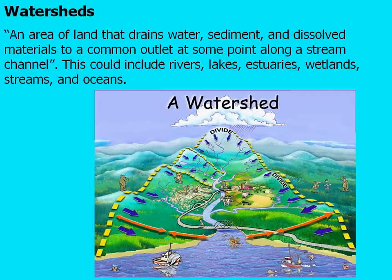Any rivers, lakes, streams, estuaries, wetlands, and even the ocean would be considered water bodies contributing to the watershed. As you can guess, humans have had a major impact on watersheds.